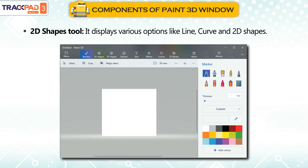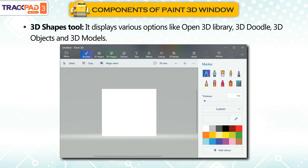2D Shapes Tool: It displays various options like Line, Curve and 2D Shapes. 3D Shapes Tool: It displays various options like Open 3D Library, 3D Doodle, 3D Objects and 3D Models.